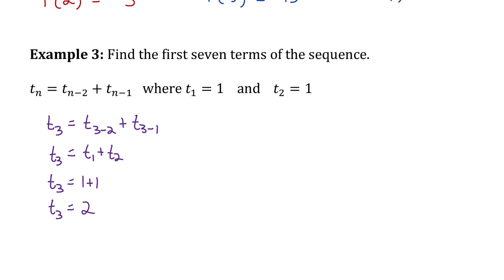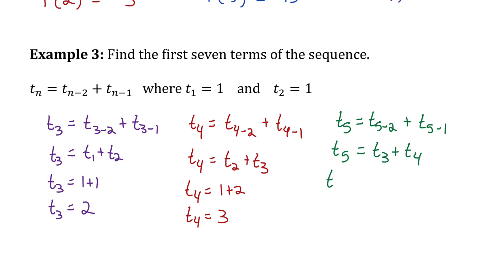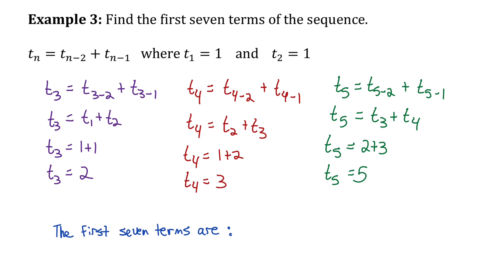Let's find a couple more terms to see the pattern. For term 4, subbing in 4 for n, term 4 equals the value of term 2 plus term 3 — the two previous terms — which are 1 and 2, so term 4 is 3. For term 5, subbing in 5 for n, term 5 equals term 3 plus term 4: 2 plus 3 is 5. The sequence so far goes: 1, 1, 2, 3, 5.